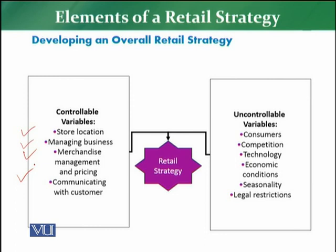Lekin there are a lot of variables which are uncontrollable — for example, consumer is uncontrollable, competition is uncontrollable — what competition will do once you have a retail store is uncontrollable. Technology is uncontrollable, economic parameters, economic conditions, political conditions, seasonality, legal restrictions, environmental situation, natural disasters — they are all uncontrollable variables which retailers have to take into consideration while making their overall retail strategy. So there are controllable variables which are part of the store, and variables that are part of the environment which are uncontrollable.